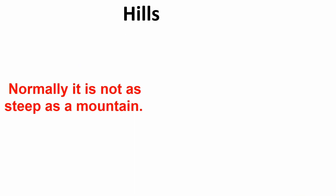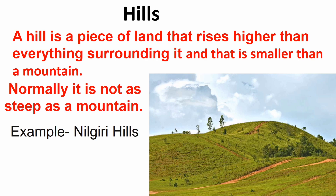Hills: A hill is a piece of land that rises higher than everything surrounding it and that is smaller than a mountain. Normally, it is not as steep as a mountain. Example, Nilgiri Hills.